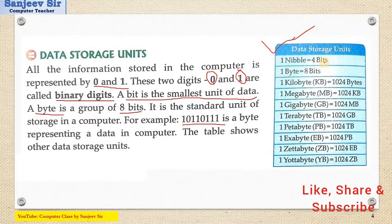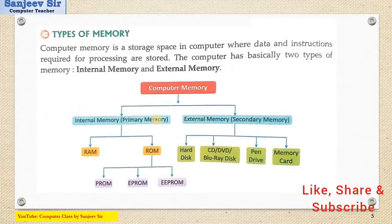One nibble is equal to 4 bits. One byte is equal to 8 bits. One KB is equal to 1024 bytes. This is important and it is also asked in examinations in senior classes. These are the data storage units. Now we move to the next topic, which is types of memory.